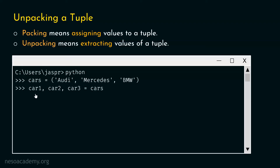In the left-hand side of the assignment expression, we mention the comma-separated variables: car1, car2, and car3. On the right-hand side, we specify the tuple name, which is cars. This simple expression unpacks the tuple so that car1 receives Audi, car2 receives Mercedes, and car3 receives BMW.